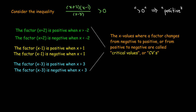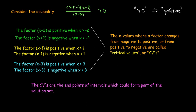The factors change sign at the critical values — they change from negative to positive or positive to negative. That's important because what we're looking for is a combination that results in a positive value, since that will satisfy the inequality greater than 0. The critical values are going to be the endpoints of the possible intervals which could form part of the solution.